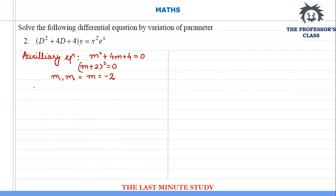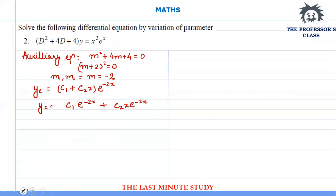For a differential equation whose both roots are the same, the general solution is given as (c1 + c2·x)·e^(mx). With m = -2, this gives c1·e^(-2x) + c2·x·e^(-2x).